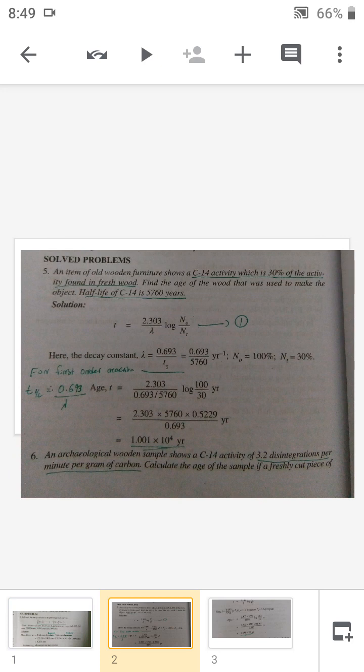From the application of radioactive isotopes, we know that t equals 2.303 divided by lambda times log N₀ by Nₜ. This is an equation for first-order reaction. t is the age of the sample, lambda is the disintegration constant, and N₀ is the activity of the fresh sample.